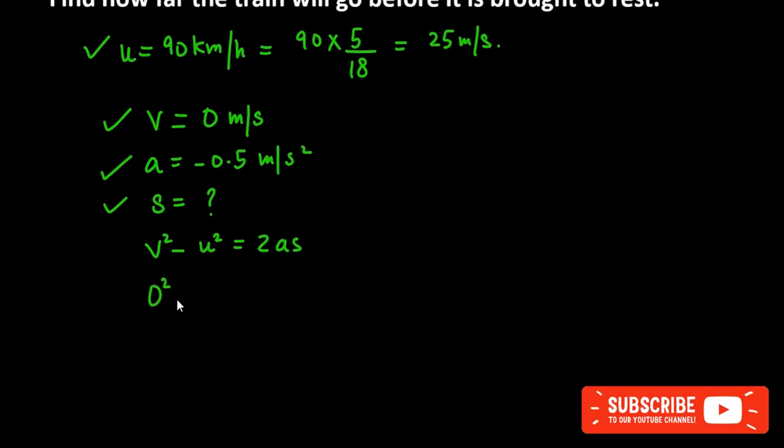V value is 0 squared, u squared is 25 squared, then you have 2 into a, where a value is minus 0.5 into s. So 0 squared is 0, 25 squared is 625 and minus is there. If you multiply 2 and 0.5, then you get 1, minus 1. Minus 1 will come down in division, minus and minus will cancel. So s value is 625.